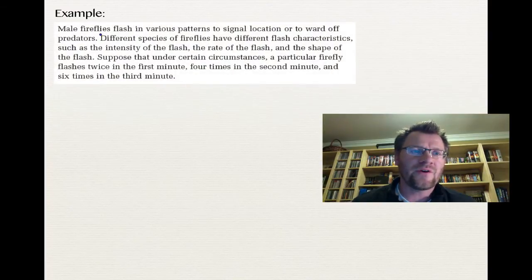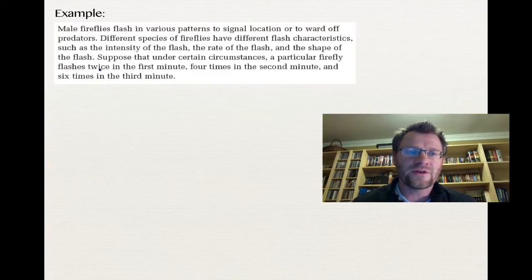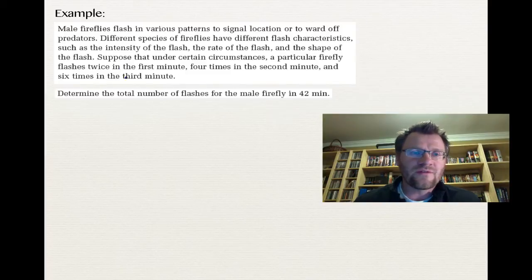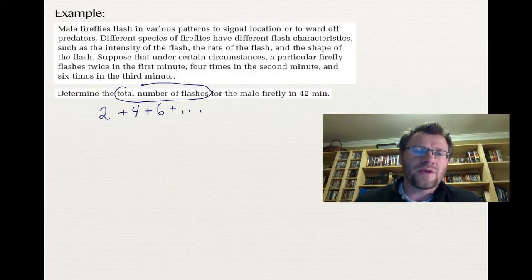Let's look at our first example. A male firefly flashes in various patterns. Suppose under certain circumstances it flashes 2 times in the first minute, 4 times in the second minute, and 6 times in the third minute. Determine the total number of flashes in 42 minutes. We write the series: 2 + 4 + 6 + … up to the 42nd minute. Since we need the total, it's a series — so we use the formula.